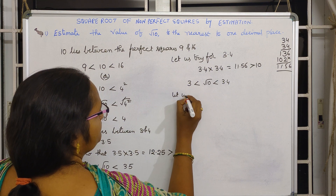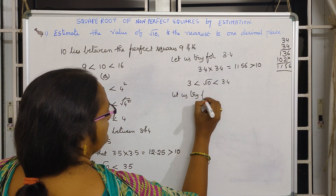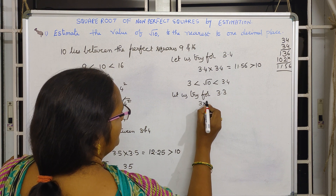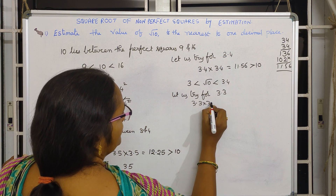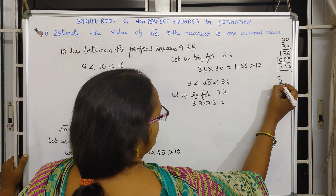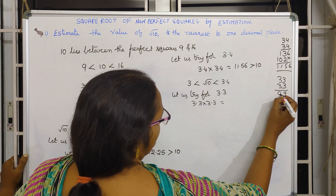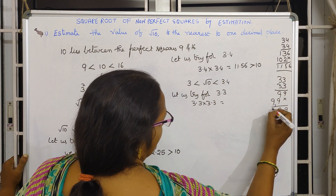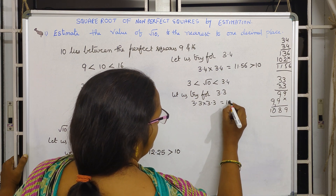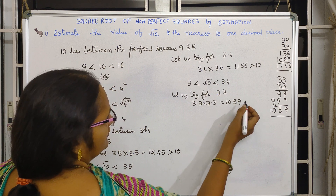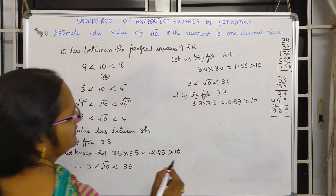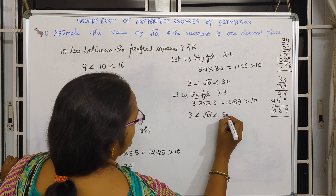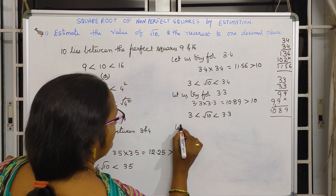Now let us try 3.3. So 3.3 times 3.3: multiplying 33 times 33 — 3 threes are 9, 3 threes are 9, 3 threes are 9, 3 threes are 9 — that gives 10.89. This is also greater than 10. So 3 is less than root 10, and root 10 is less than 3.3.